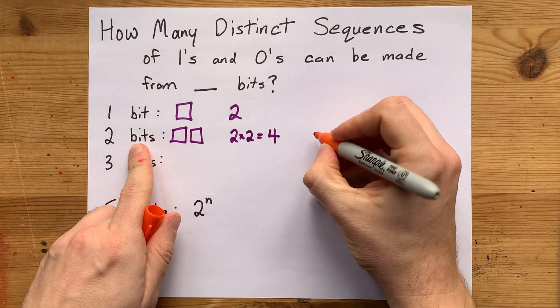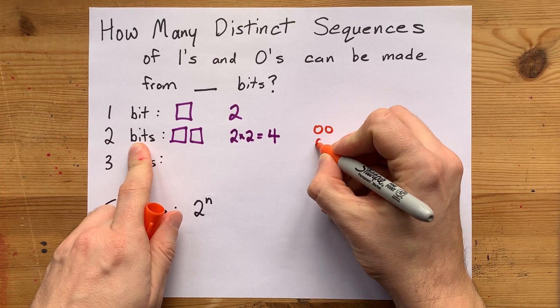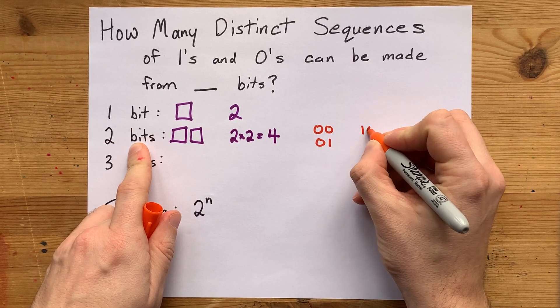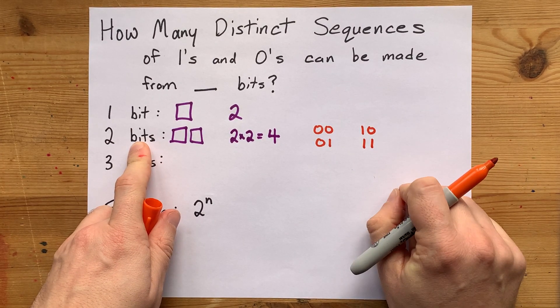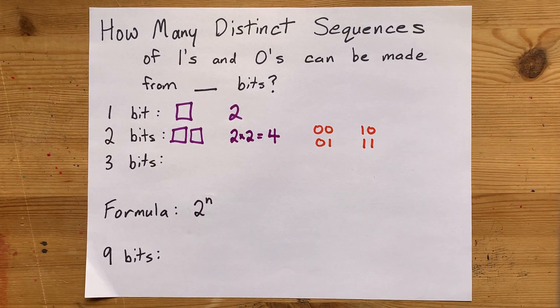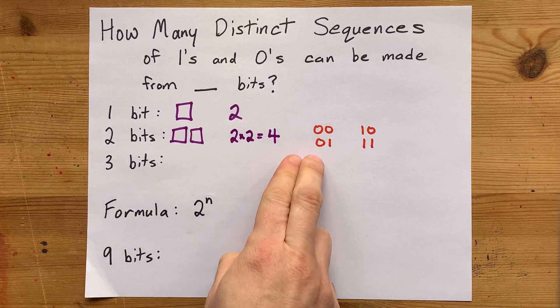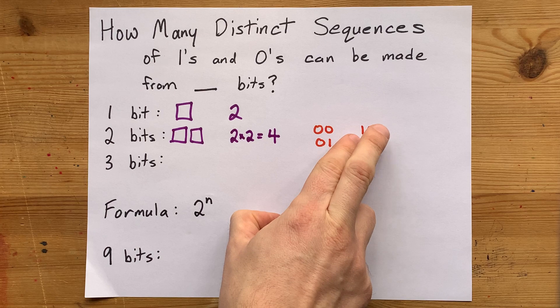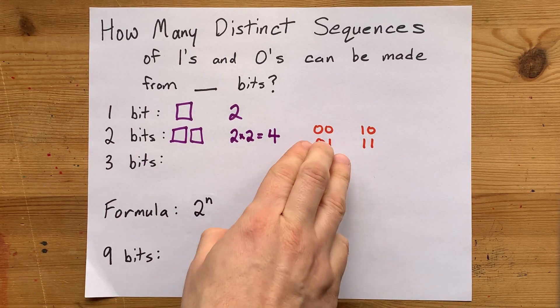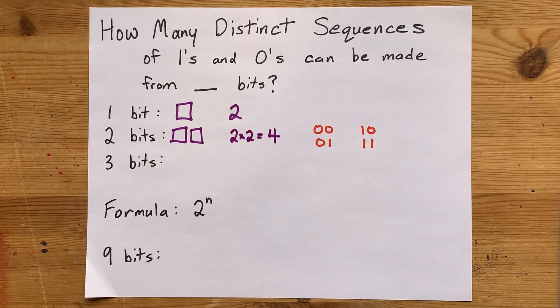Now for two bits, it's easy to list them. You could have 0,0, 0,1, 1,0, or 1,1. Those are all different binary sequences. The order matters - 0,1 is not the same as 1,0. So those are the four distinct sequences of two bits.